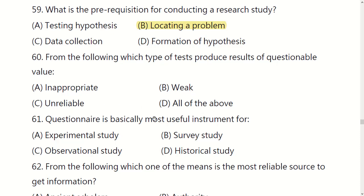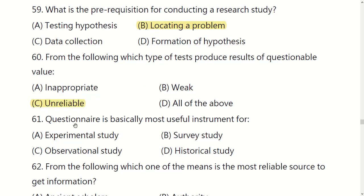From the following, which type of test procedure results in questionable value? Options are: inappropriate, weak, unreliable, or all of the above. The right option is C: unreliable.